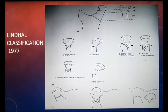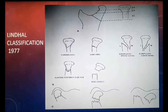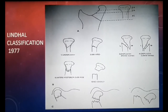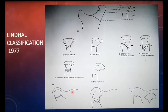Different classification systems have been given by various authors. Here we shall discuss two such systems in detail. The first system was given by Lindahl in 1977. He proposed a system that classified condylar fractures based on: the anatomic location of the fracture, the relationship of the condylar segment to the mandibular fragment, and the relationship between the condylar head and the glenoid fossa.